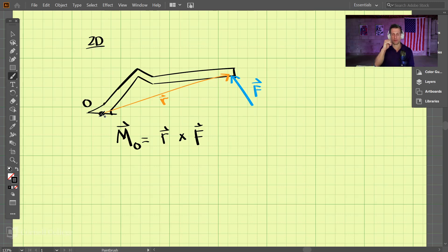And so the moment wraps around that vector using the right hand rule, so it's a counterclockwise moment using the right hand rule.